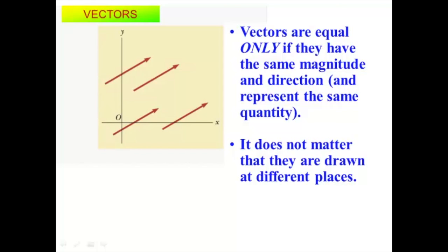All vectors are equal if they are the same length, the same angle, and representing the same thing. We can have multiple vectors on a page and they can be very similar, but if they're talking about different things, we have to be mindful of that. When adding velocity vectors, a velocity vector plus a velocity vector can be added. A force vector and a velocity vector cannot be added, because they're different things.